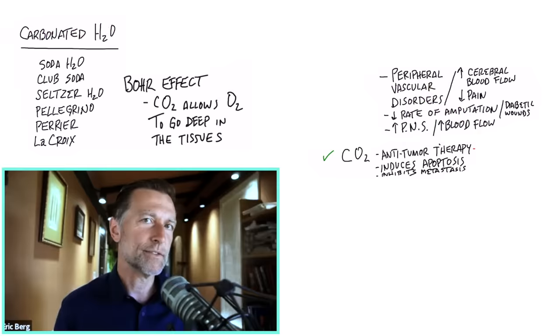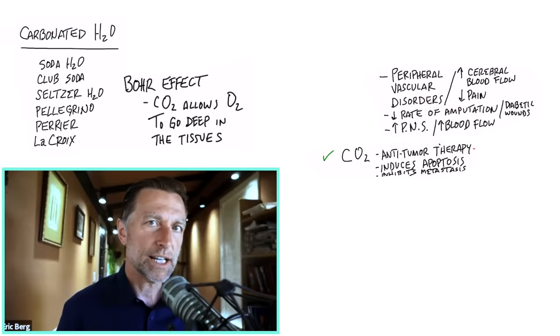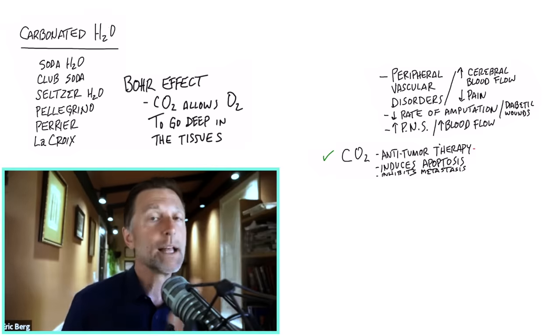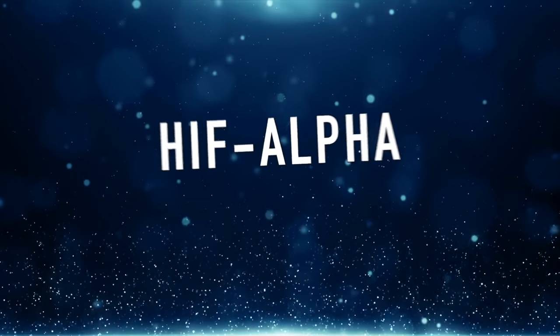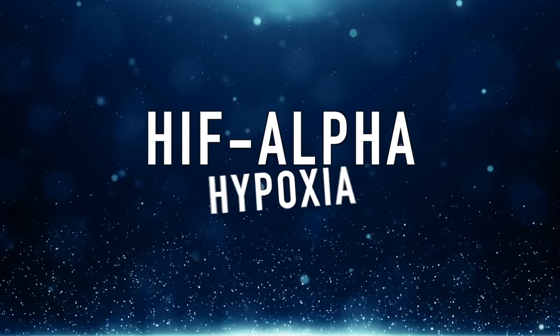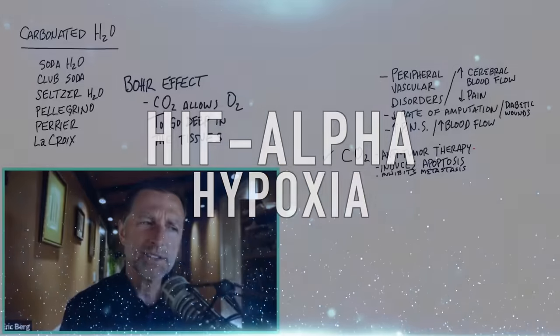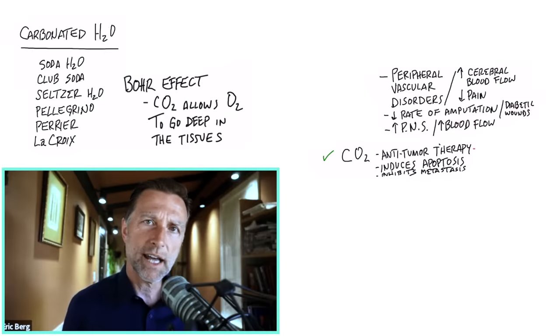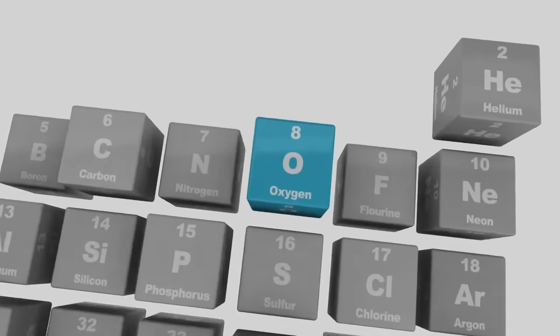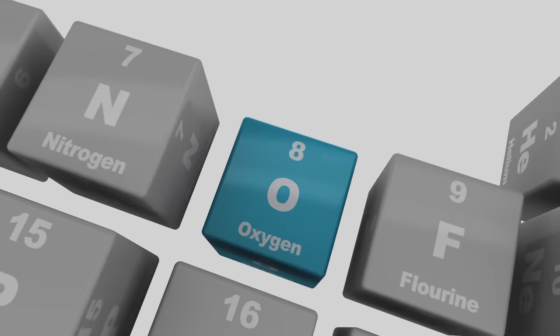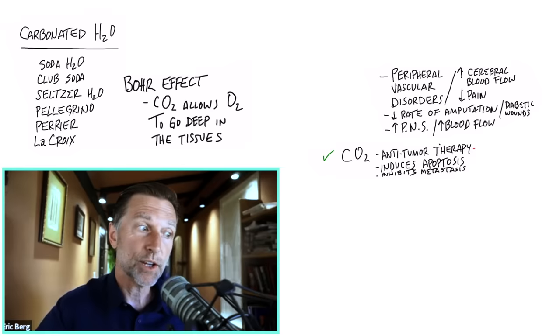It also inhibits this very interesting gene that's involved in the switching mechanism between a normal cell and it turning into cancer. That gene is called HIF-alpha, which is involved in hypoxia. This probably doesn't make sense unless you understand that CO2 allows oxygen to go into the tissues. And as bad as hypoxia is, it can be created by a lowered amount of CO2, as well as lowered oxygen levels.